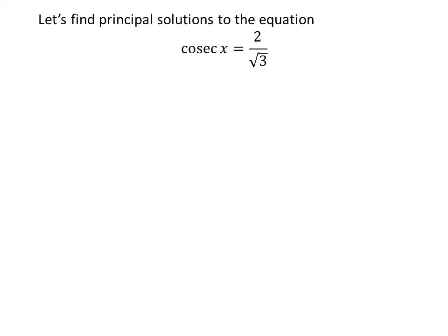Let us first find the principal solutions to the equation cosecant of x equals 2 upon square root of 3. We know the solutions to the trigonometric equation for which x is greater than or equal to 0 and less than 2π are the principal solutions.